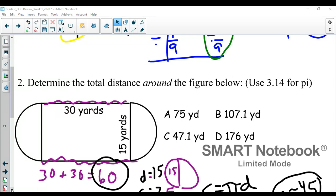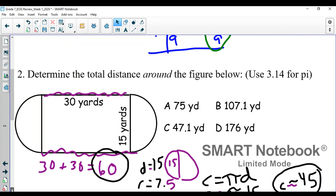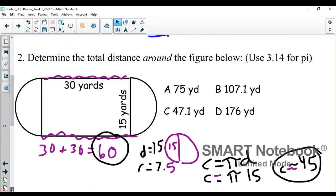The first part of the problem: if I were to go around those straightaways, I would cover 30 yards here and 30 yards here, so that would be a total of 60 yards. The next piece I kind of had to think about because I have two semicircles.